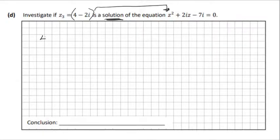So we go (4 - 2i)² for the first part, plus 2i by z again (4 - 2i), and finally minus 7i.